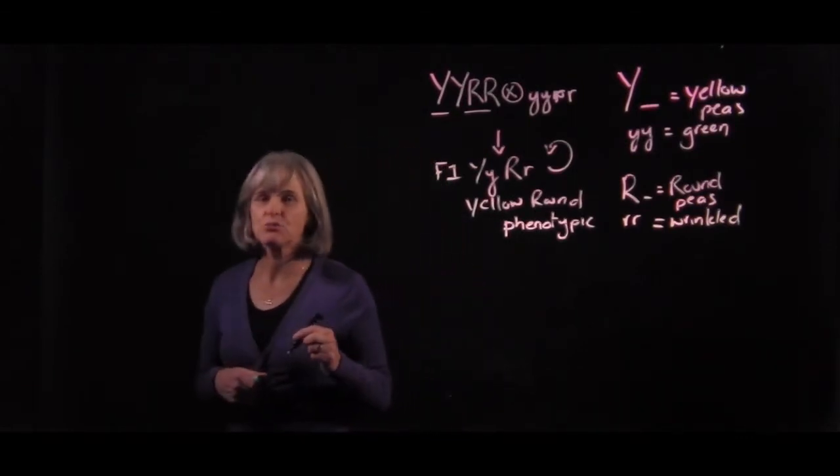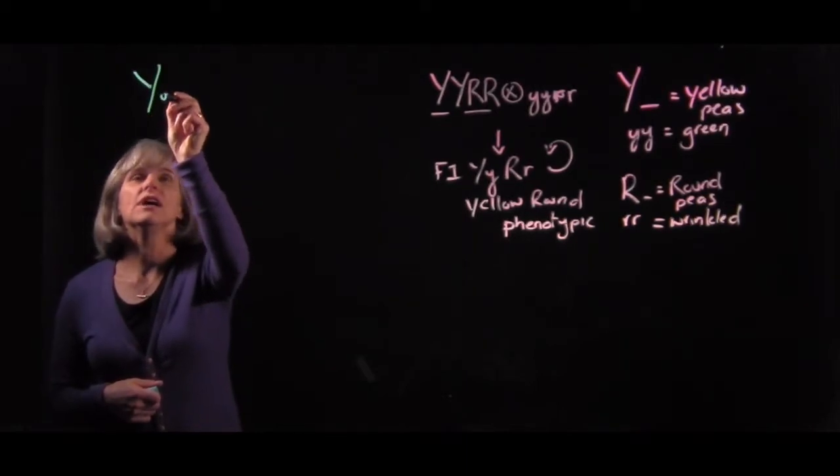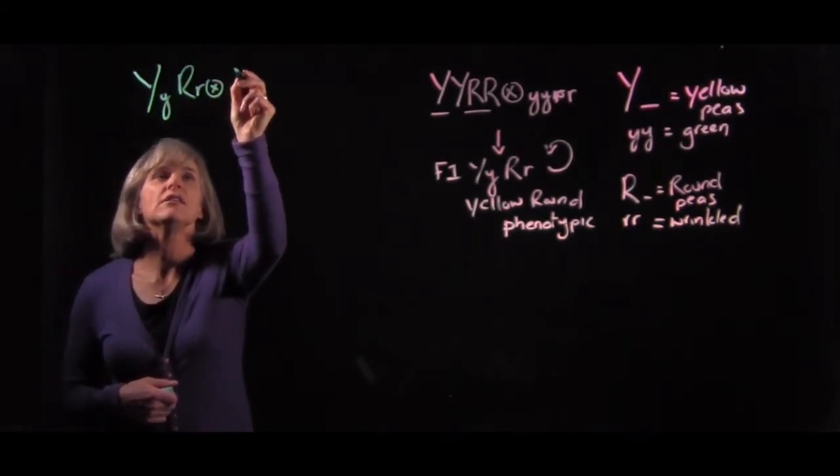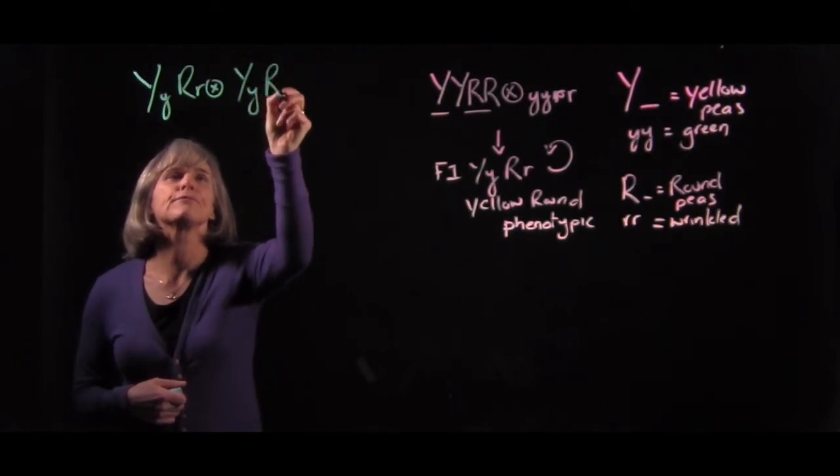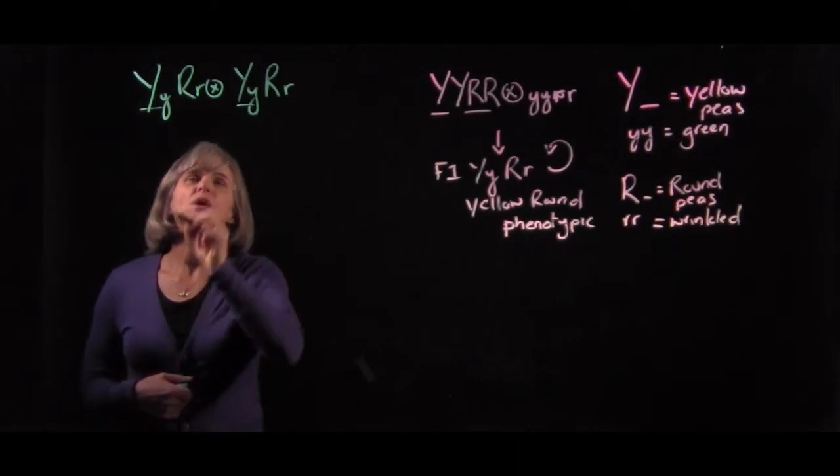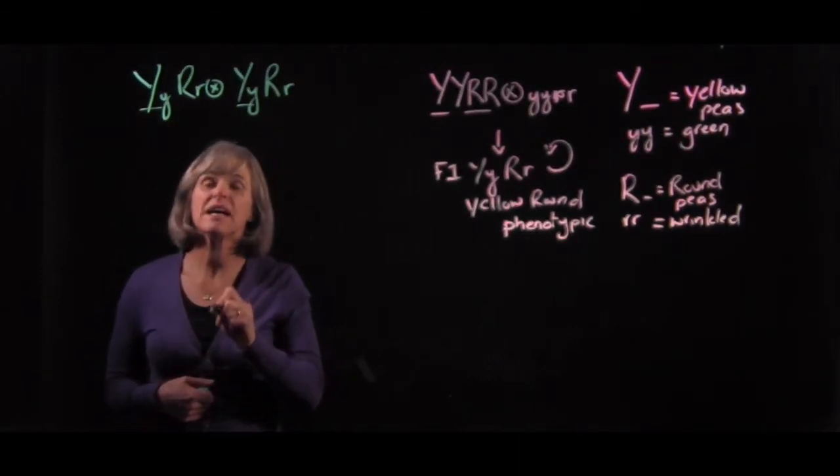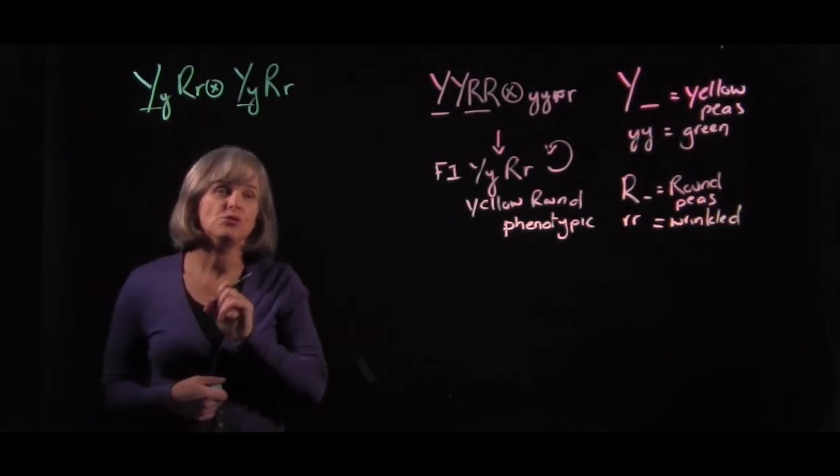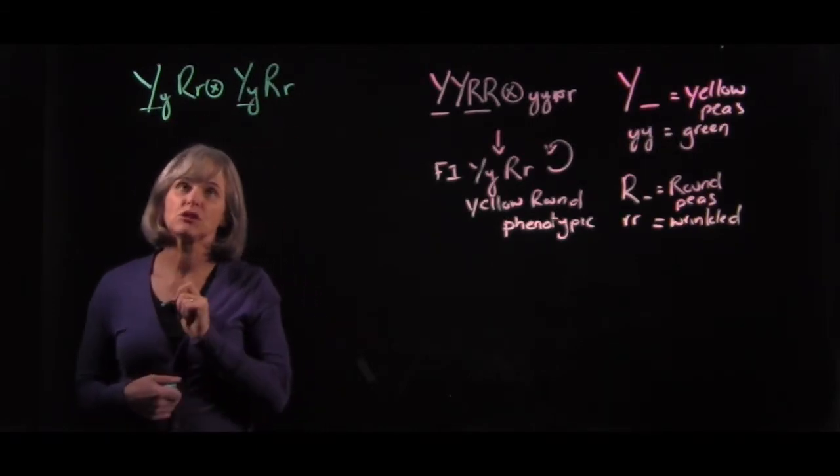So let me work through that branch diagram with you. So here's how we would approach it. I like to rewrite the cross up here. So here's the cross, here's the parents. And because the genes are unlinked, we can consider each of them separately. They're independent events.